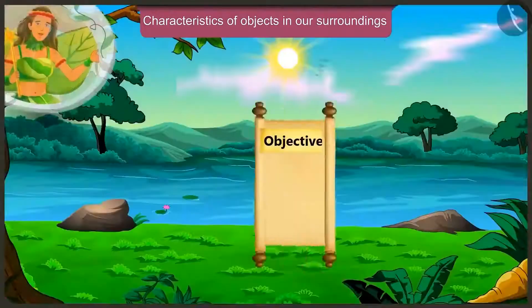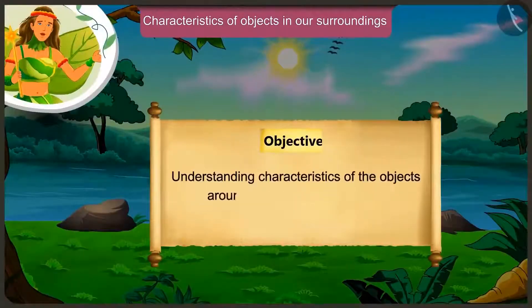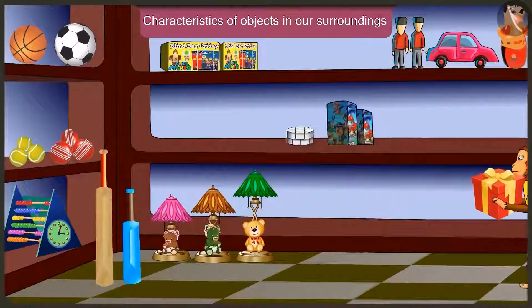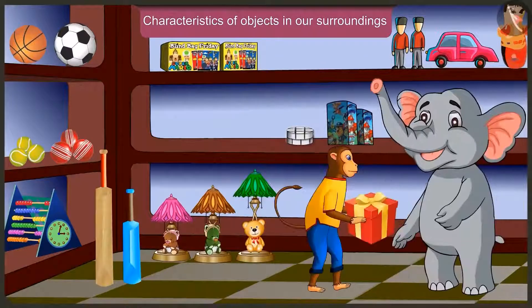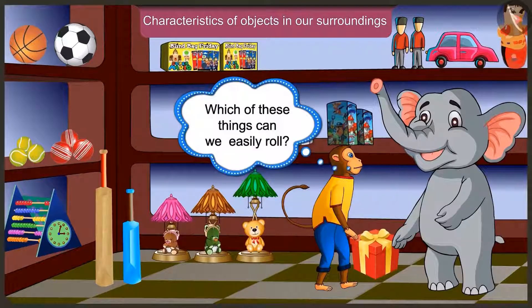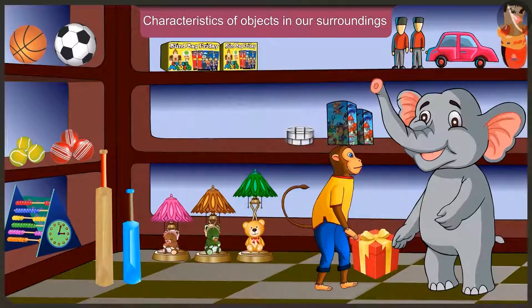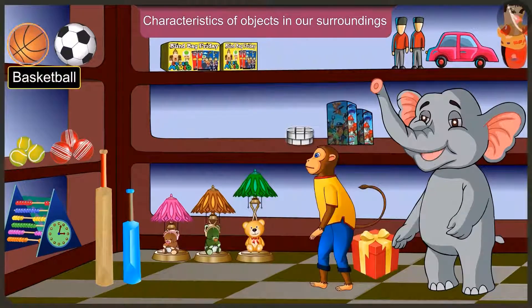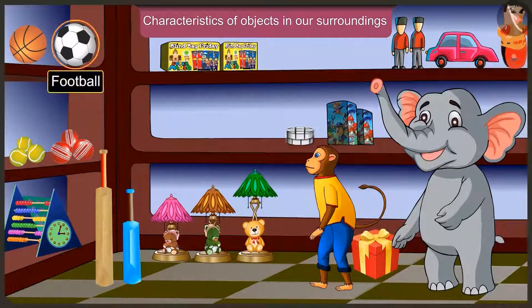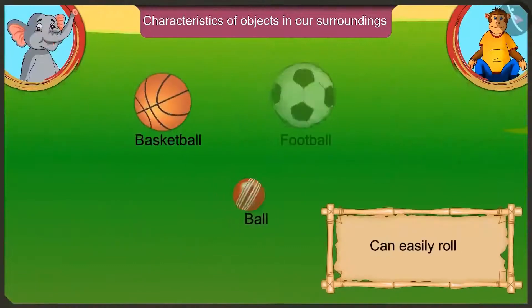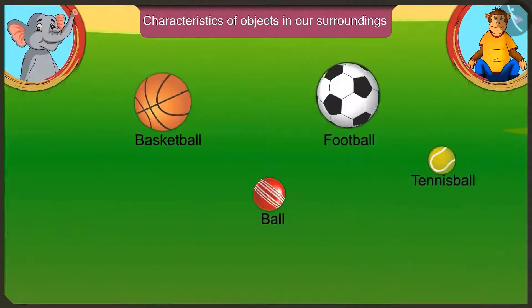Today, we will understand the characteristics of the objects around us with some examples. Which are the things here which can be easily rolled? We can easily roll basketball, ball, football and tennis ball, because they don't have any corners and they have a curved surface.